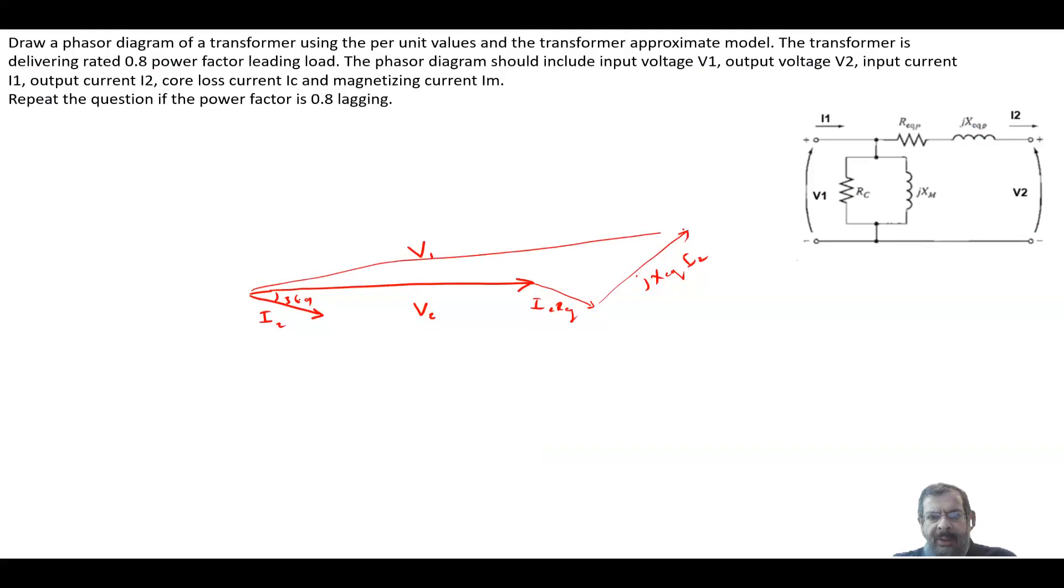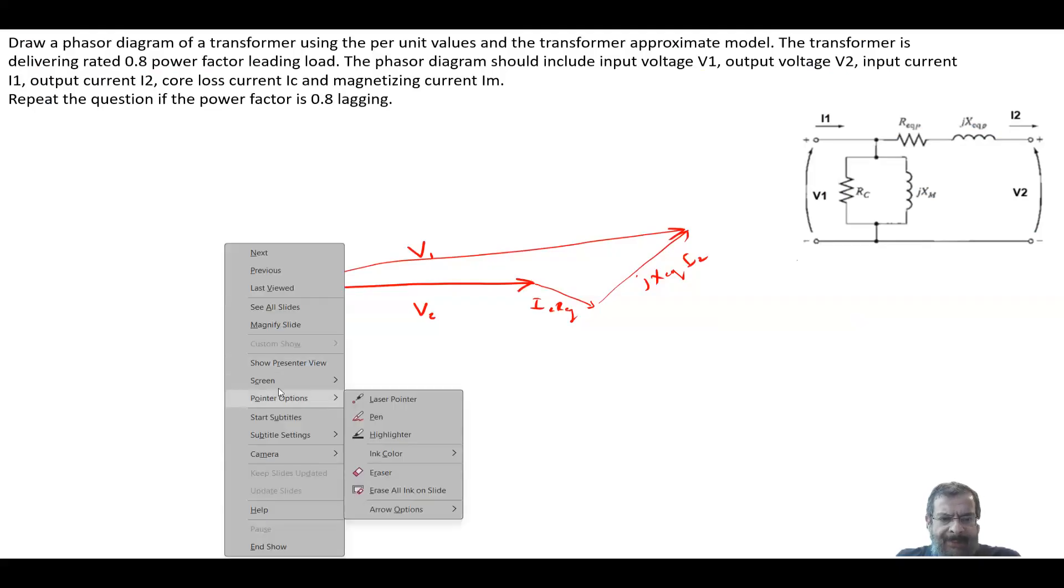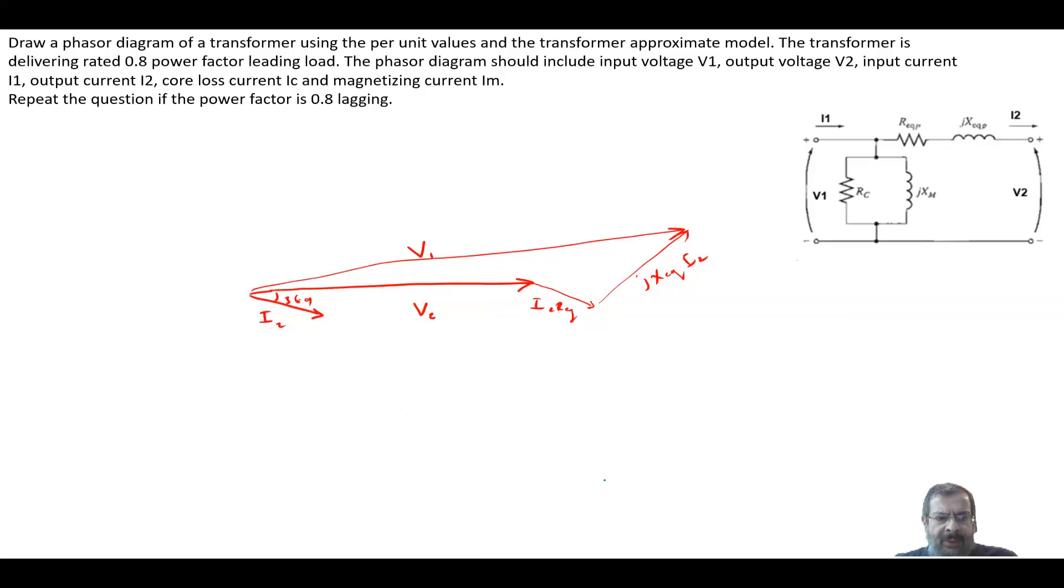Now you need IC again. IC will be in phase with V1, so this is IC. Bring this one here in parallel, and then we have IM 90 degrees with this. Adding IC, IM, and I2, you get I1. This is how we can do the phasor diagram for a leading or lagging power factor.